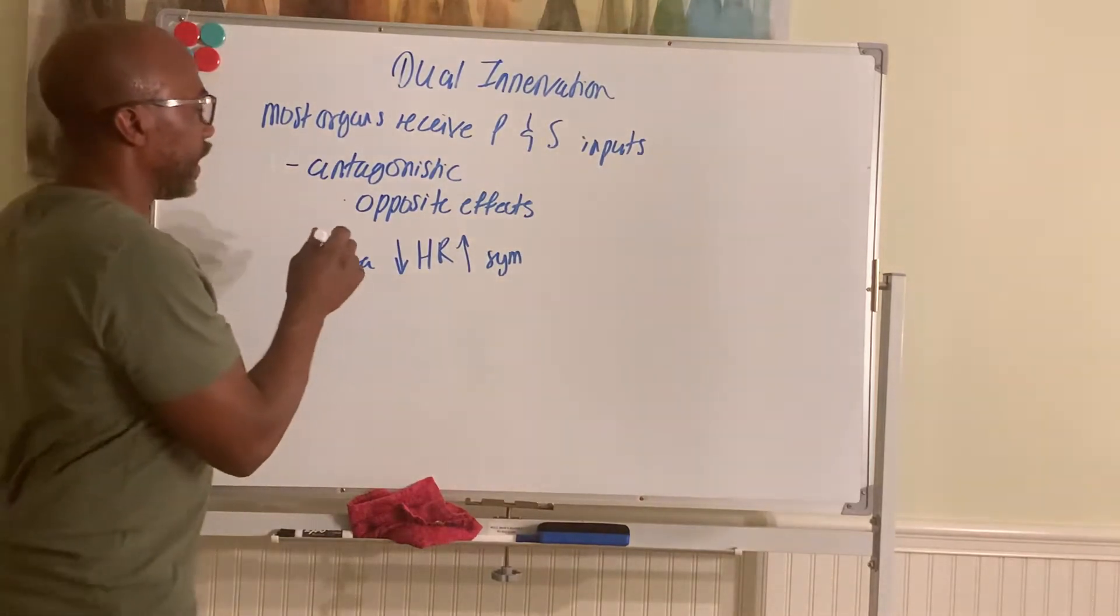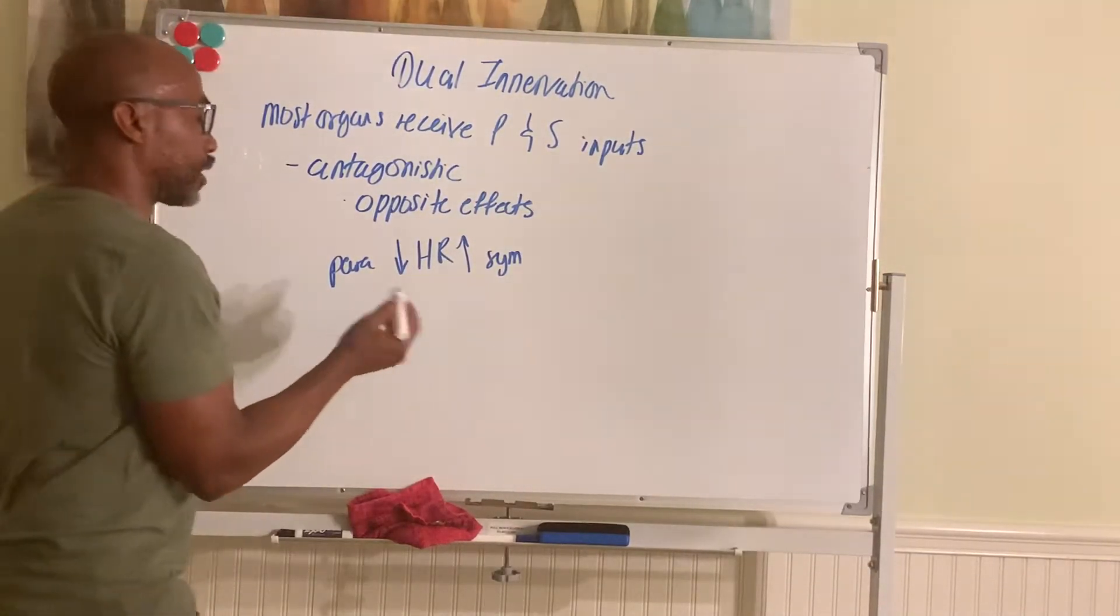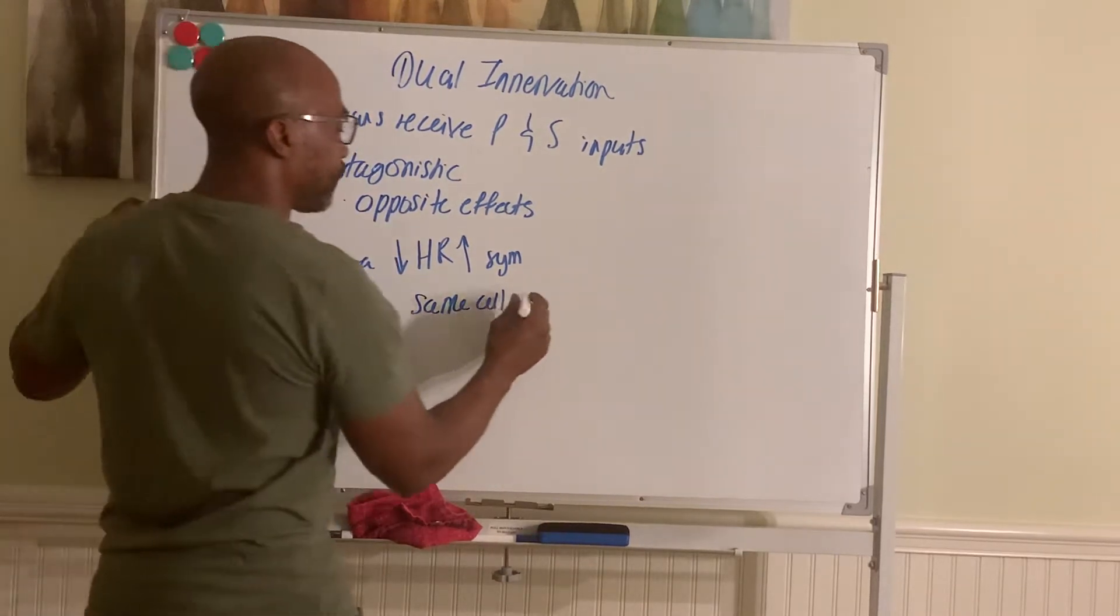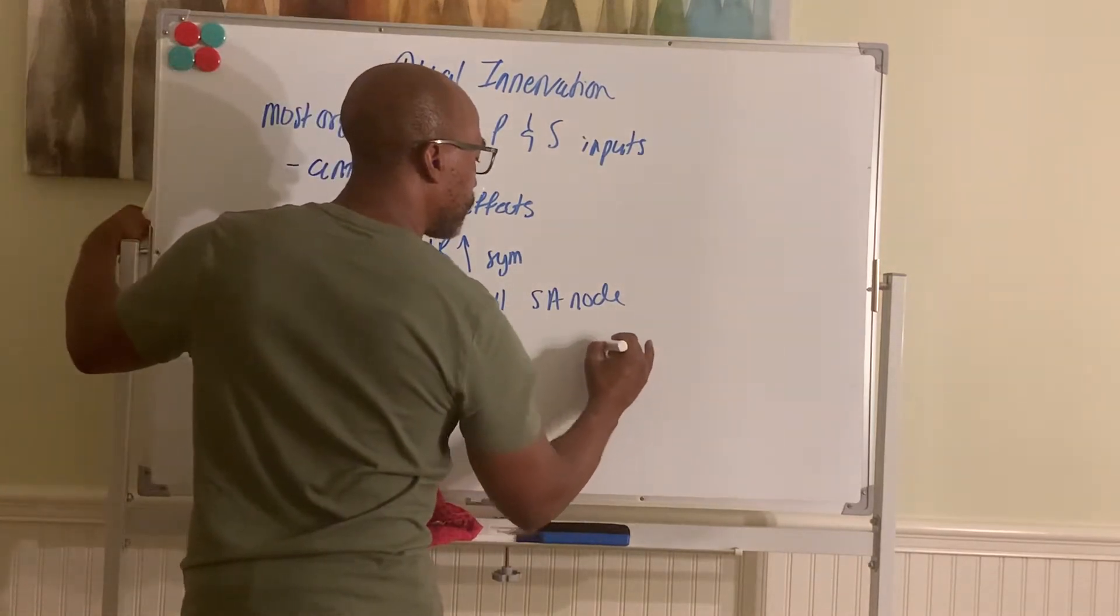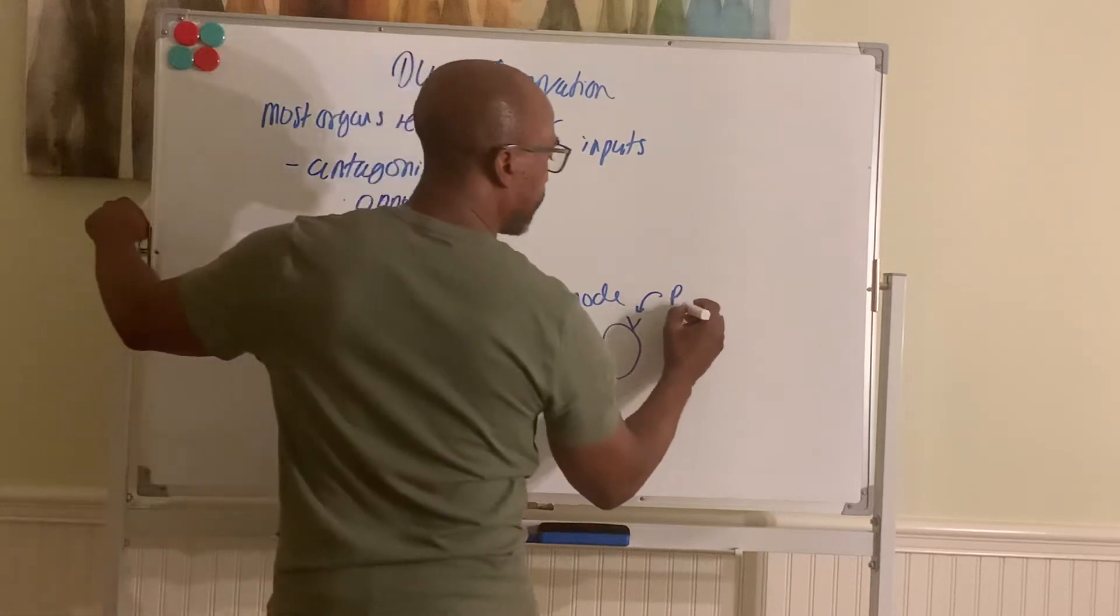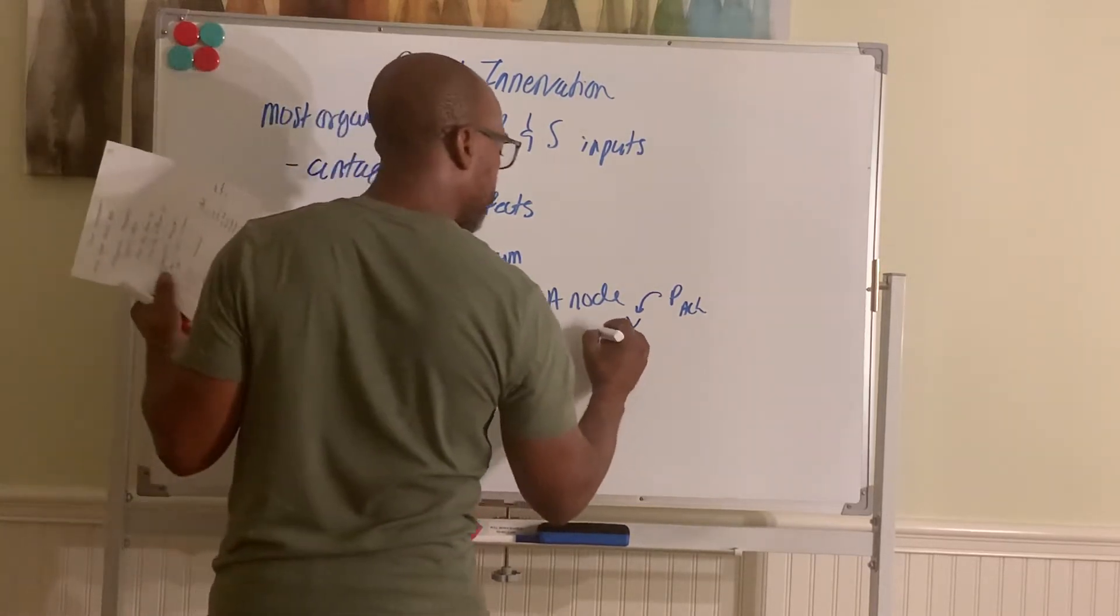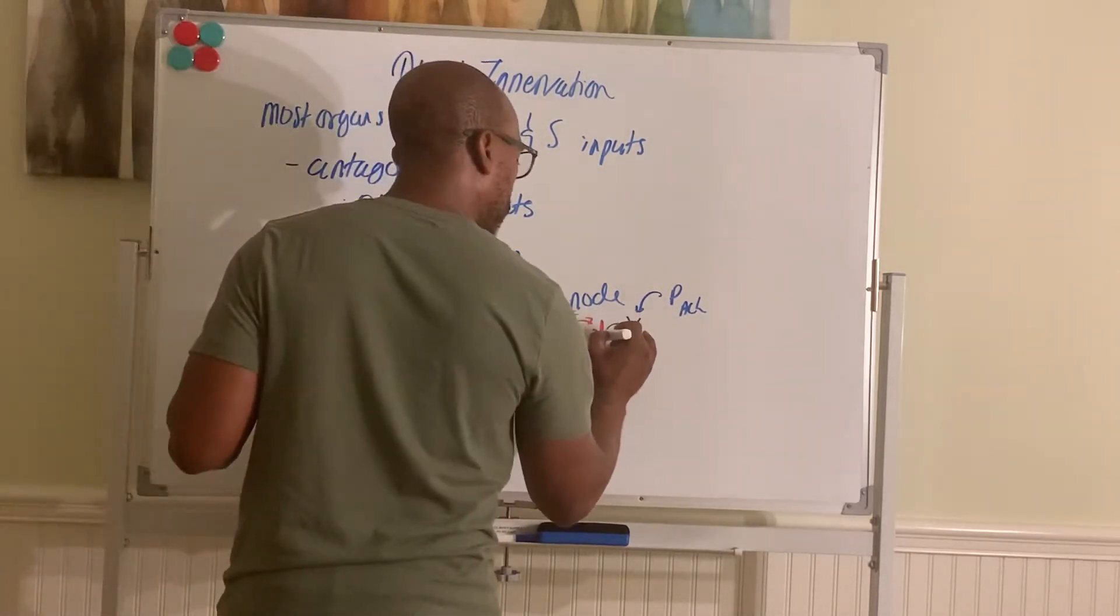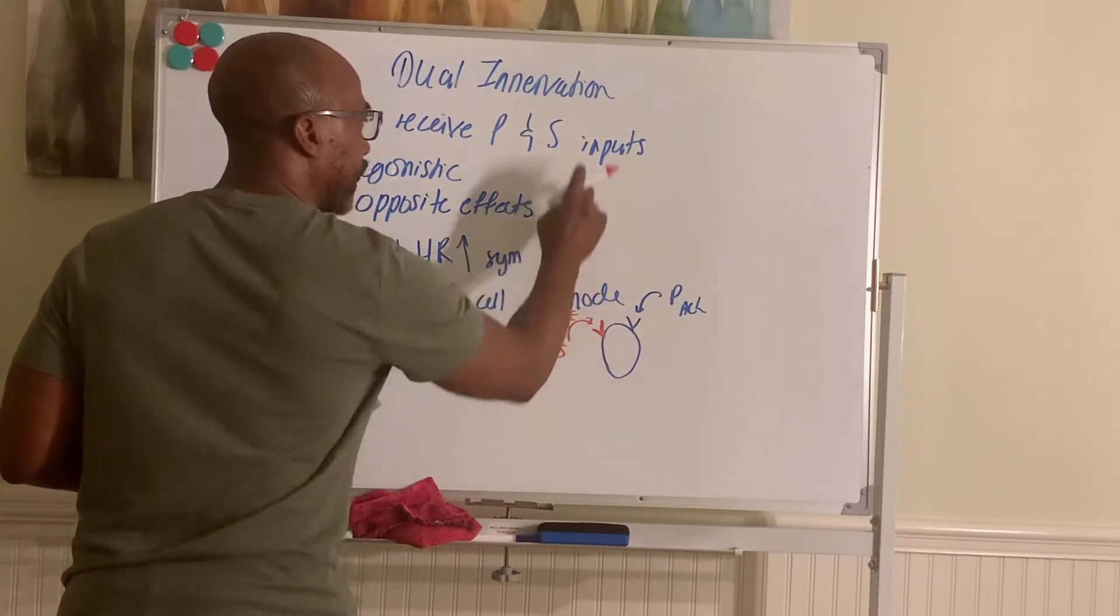Now, sometimes both divisions, para and simpa, can act on the same exact cell, cell type, cell population. So for same cell antagonism, we can use the heart as an example. Your SA node cells, the heart pacemaker, those cells have receptors for para, or basically receptors for ACH, and also have receptors for norepinephrine. And so they can respond to both systems. This is an example where the same cell populations can be influenced in opposite ways by the different branches of the ANS.